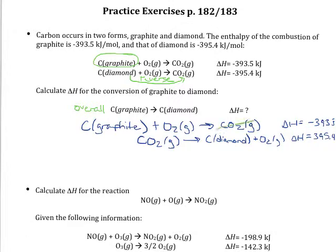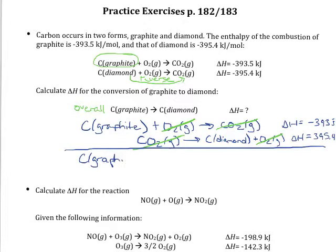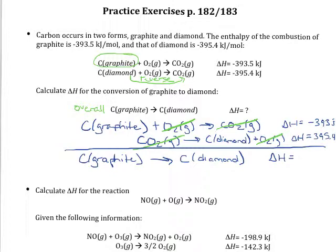Now I've got carbon dioxide on the product side and one on the reactant side — those cancel. If I add these reactions together algebraically, what I end up with is carbon as graphite going to carbon as diamond, which is exactly what I want. Adding the enthalpies: negative 393.5 kilojoules plus positive 395.4 kilojoules gives a ΔH for this overall reaction of positive 1.9 kilojoules. Remember, if you flip the reaction, you flip the sign — same numbers, just becomes positive or negative.